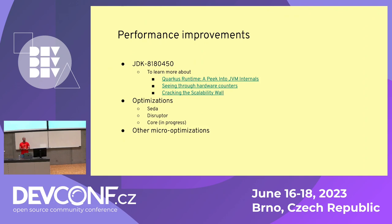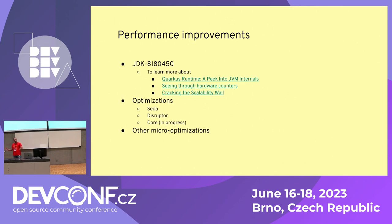As we worked to address this issue and fix the problems we identified, we optimized several components in Camel, notably SEDA and Disruptor. We also have some changes happening on core, which benefit basically all 300 components that we have. And of course, during the course of investigating these performance issues, we came out with other micro-optimizations that alone wouldn't do much, but in aggregate can provide some nice performance improvements.